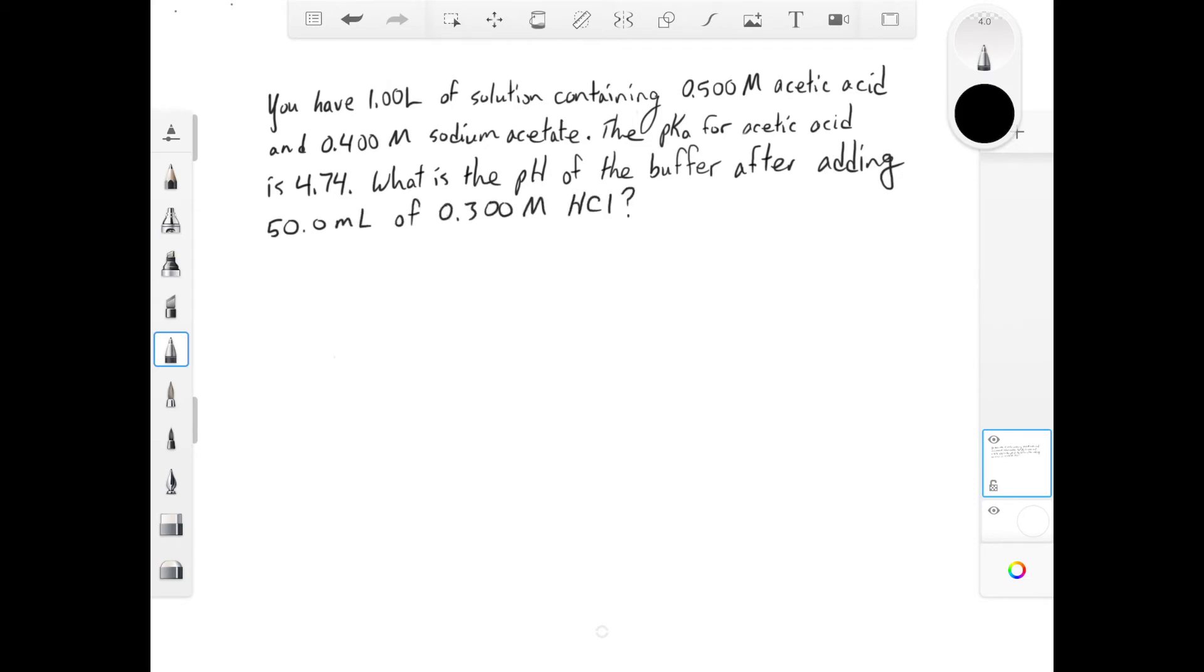The second part of this example asks, what's the pH of the buffer after you add 50 mL of 0.3 molar HCl? So this is an addition of a smaller amount of strong acid, in this case.